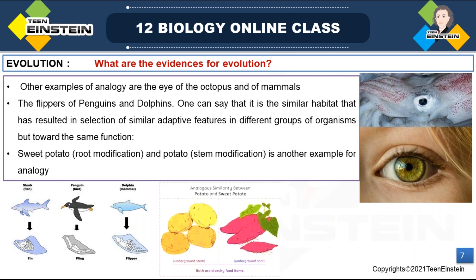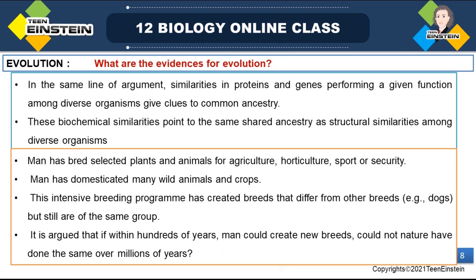To summarize: convergent evolution is related to analogous organs, and divergent evolution is related to homologous organs. You have to learn convergent and divergent evolution, along with homologous and analogous organs.